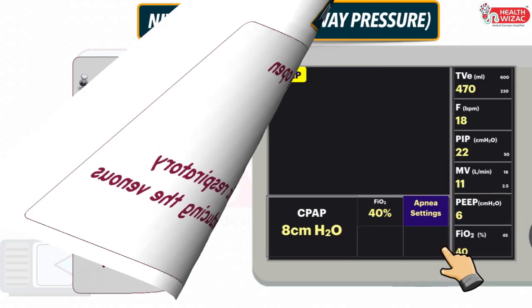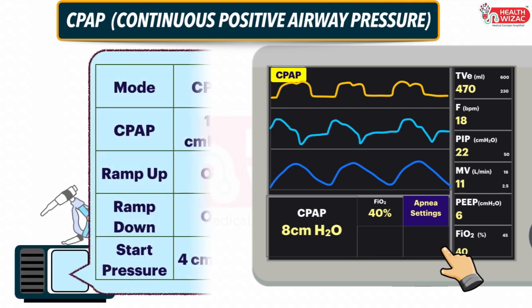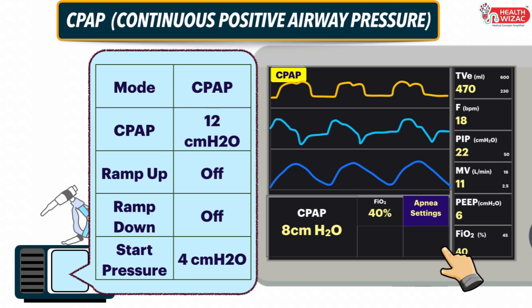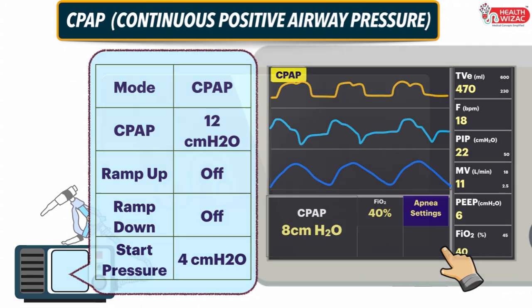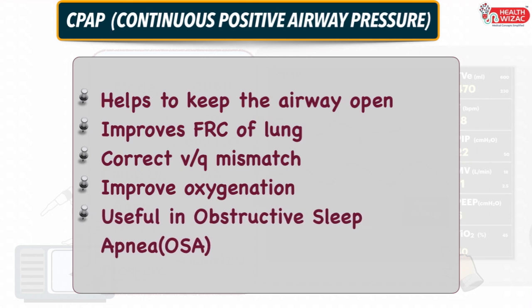Next is CPAP mode or Continuous Positive Airway Pressure mode. If a ventilator is used to deliver CPAP mode, we have to set CPAP value, FiO2 level, and Apnea settings for backup ventilation. If we use a small CPAP machine, we set CPAP value and start pressure, and depending upon the patient condition, ramp up and ramp down settings. Key highlights: it helps keep the airway open, improves functional residual capacity of the lung, corrects VQ mismatch, improves oxygenation, and is very useful in treating patients with obstructive sleep apnea.